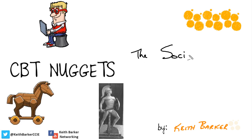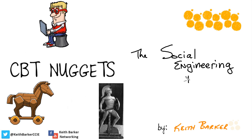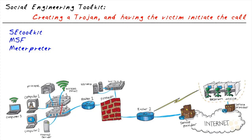There's more than one way to skin a rabbit, and there's more than one way to create a Trojan. In this nugget, I'd like to walk you through the creation, deployment, and verification of a Trojan using the Social Engineering Toolkit. One of the tools that's like a Swiss army knife we want to be familiar with is the Social Engineering Toolkit, or SET, available and included as part of current distributions of Kali Linux. The SEToolkit leverages the Metasploit framework and also leverages Meterpreter for compromising and hacking of systems.